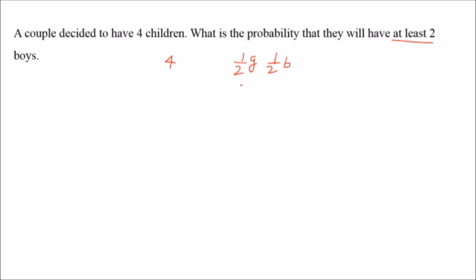It is not saying the first child will be a boy, second child will be a girl, third child will be a boy and the fourth one will be a girl. We don't know the sequence in which the boys will take birth. So what are the possibilities? There may be two boys and two girls, or three boys and one girl, or all four will be boys and no girl. So how do we calculate such problems?